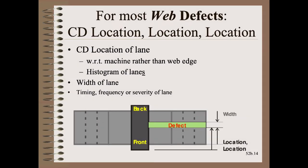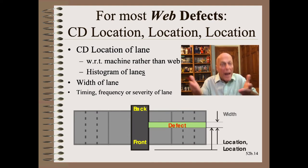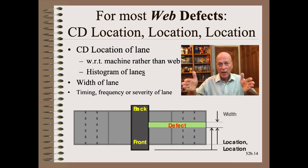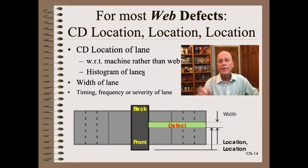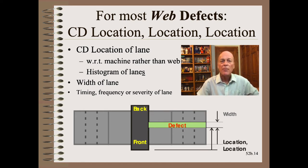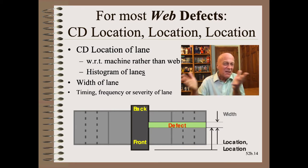Instead of reinventing the wheel, why not get back to basics and buy a book, go to school, or at least look it up on YouTube? In the next two slides, I will show you two pieces of data that are usually far more important than time, and then we will detail the four example problems. For most web defects, the CD location with respect to the web maker or web converting element is most important, with the width of the lane being of secondary importance.